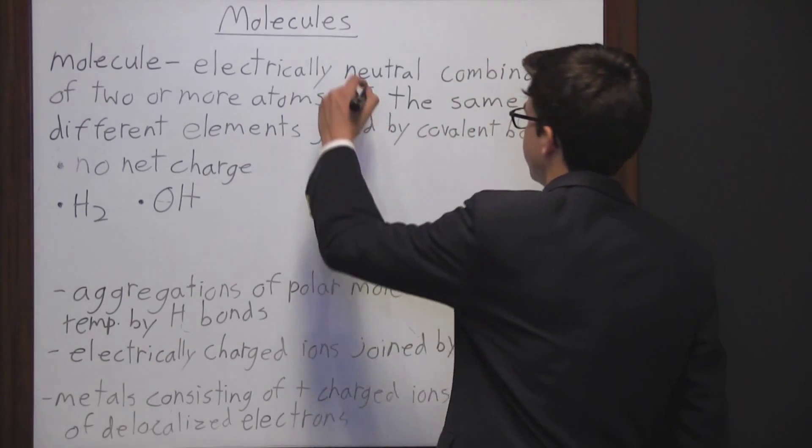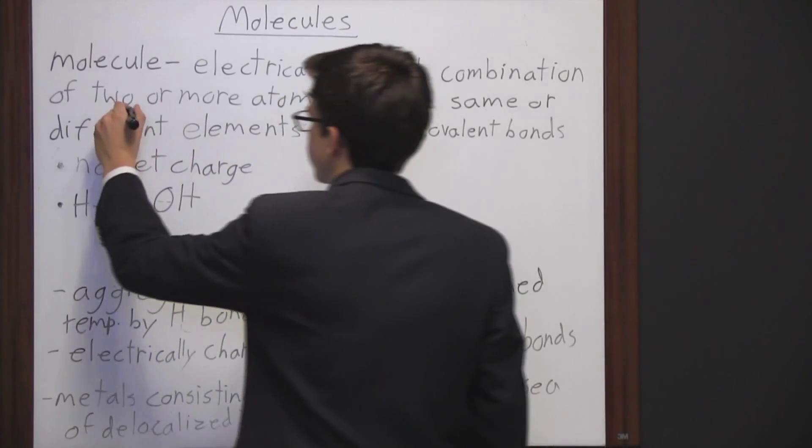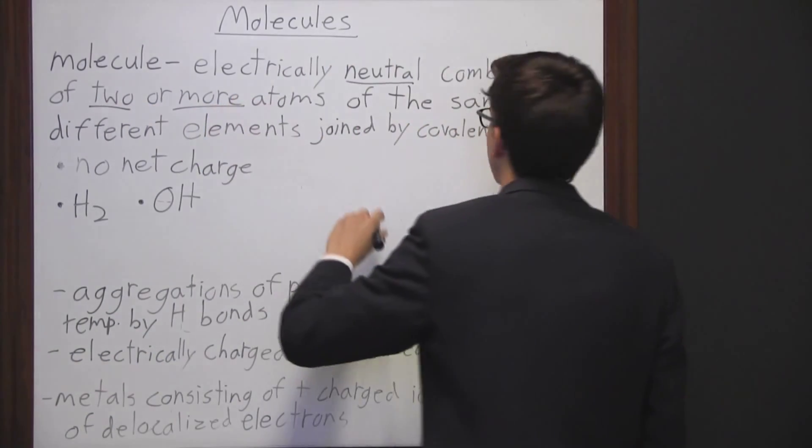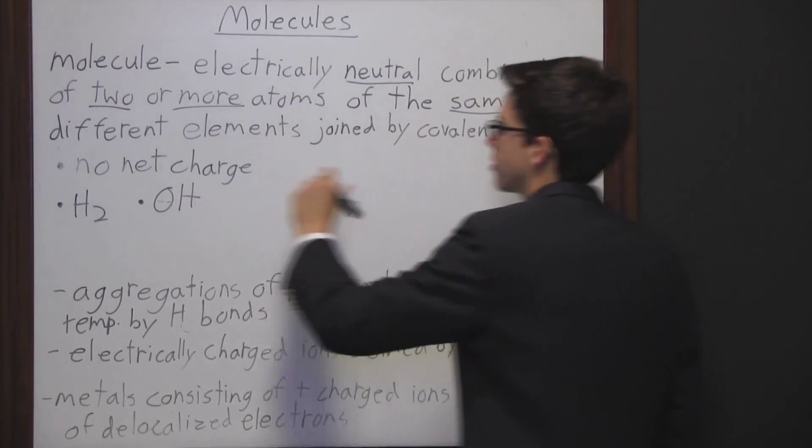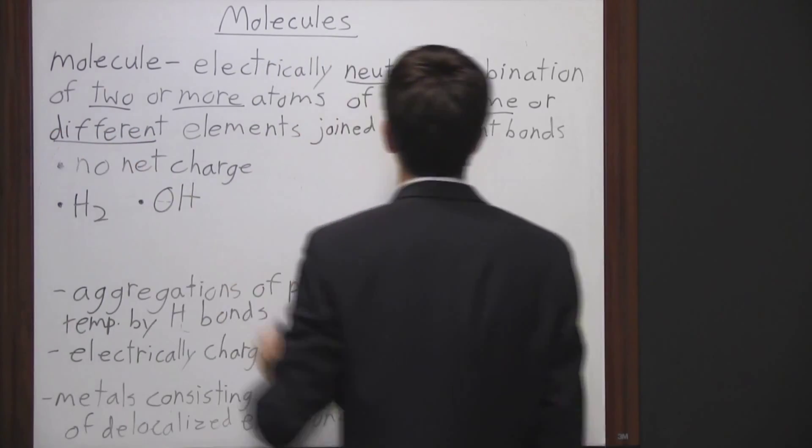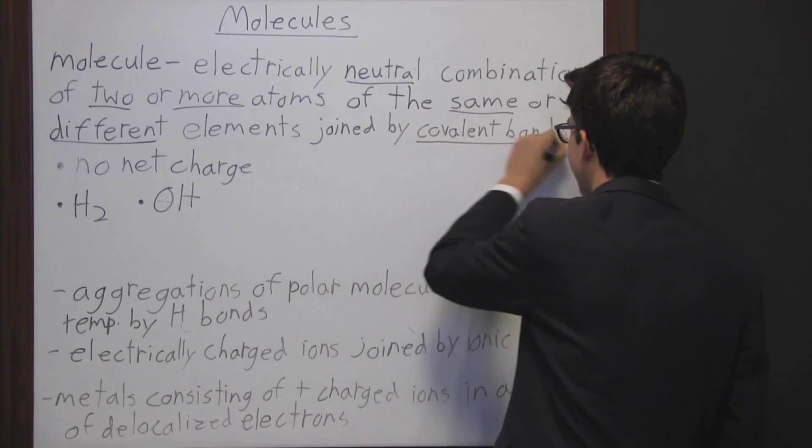So remember all these things: they're neutral, there has to be two but there can also be more, same elements or different elements, and they have to be joined by covalent bonds.